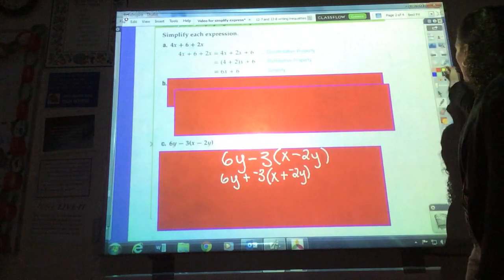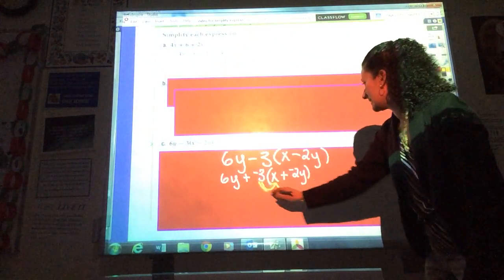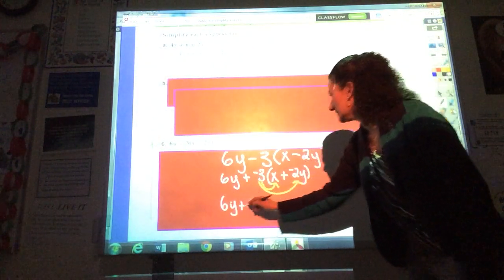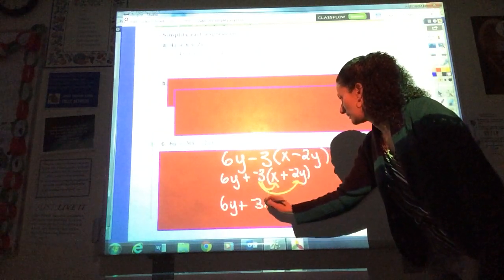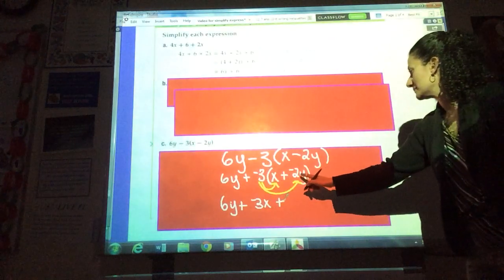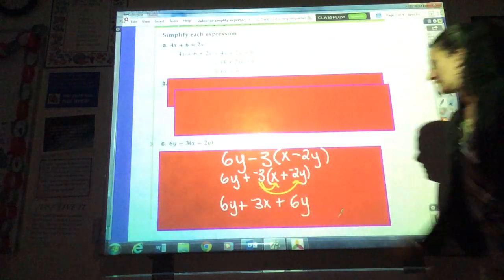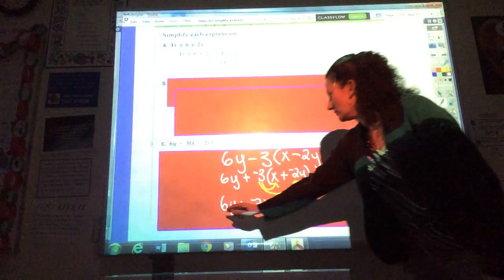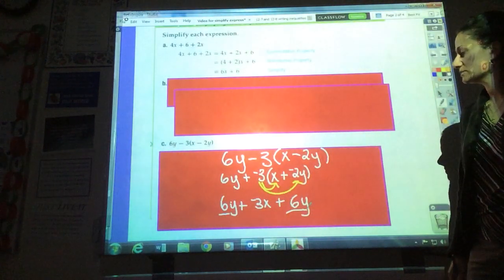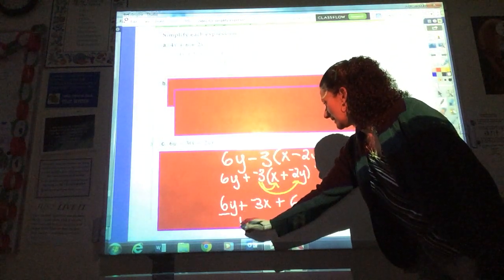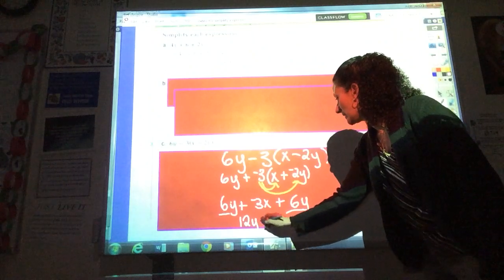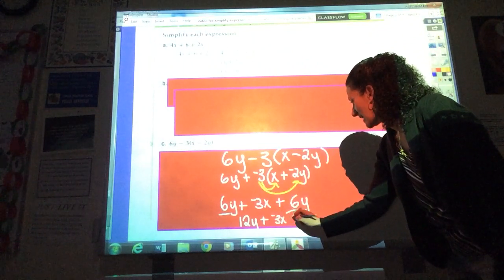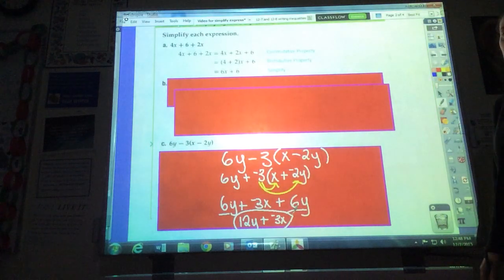So right here I've got to do negative 3 times x and negative 3 times negative 2y. So I've got 6y plus negative 3 times x, that's negative 3x, plus negative 3 times negative 2y, that's 6y. And I'm still not finished. Now I'm going to take the last step, which is to combine any like terms. I still have 6y and 6y, those are like terms. So I can add the coefficients 6 and 6, that gives me 12y plus, I have no other x terms, so I've just got to keep that negative 3x. And I cannot go any further, so that is in simplest form.